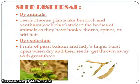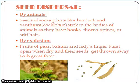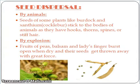Dispersal by animals: Animals and human beings throw seeds here and there, and this way seeds get scattered. Seeds of some plants like burdock and xanthium stick to the bodies of animals as they have hooks, thorns, spines, or stiff hairs. Dispersal by explosion: Fruits of peas, balsam, and lady's finger burst open when dry, scattering the seeds in all directions.